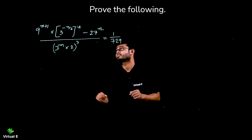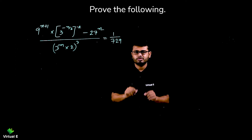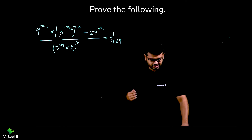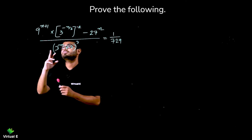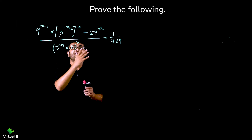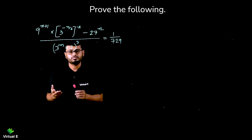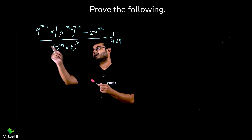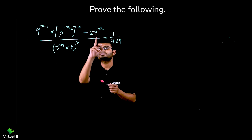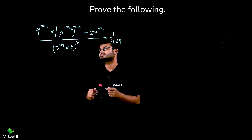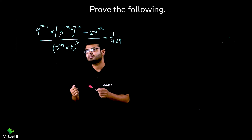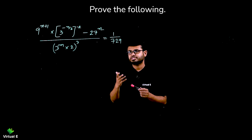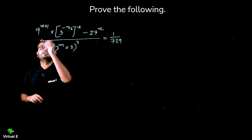Let's discuss one more question. If we have this condition, then prove that m minus n is equal to 2. We need to get the relation between m and n. We have 9 raised to n plus 1 into 3 raised to 2 minus n, divided by 2 raised to 2, minus 27 raised to n, equal to 729. To approach this, always try to have the same base — that is the most convenient thing to do. So nine we can express as 3 raised to 2, and twenty-seven as 3 raised to 3. And 729 is the cube of 9, which we can write as 3 raised to 6.